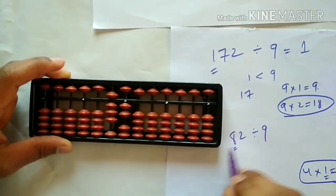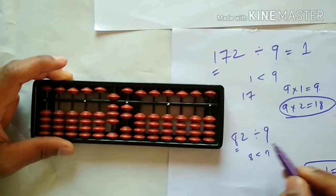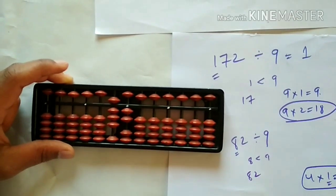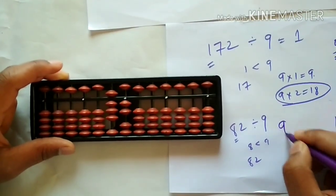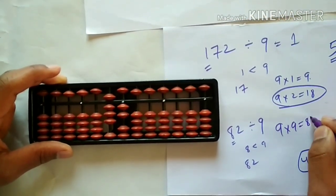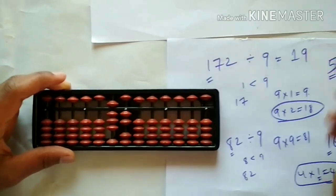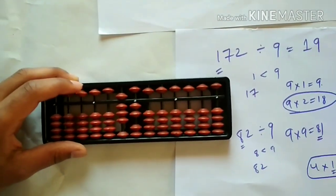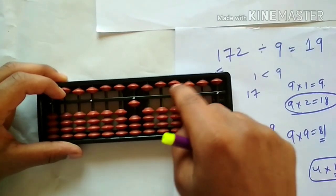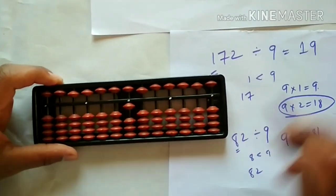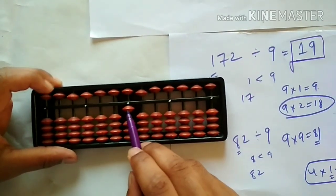82 divided by 9. Let's check the first digit — here 8 is less than 9, so go for 2 digits: 82. The nearest multiple in the table of 9 is 9 into 9 is equal to 81. So let's write 9 here and subtract 81 from the 10's round. If we subtract 81 from the 10's round, we are left with 1. So here 19 is the quotient and 1 is the remainder.